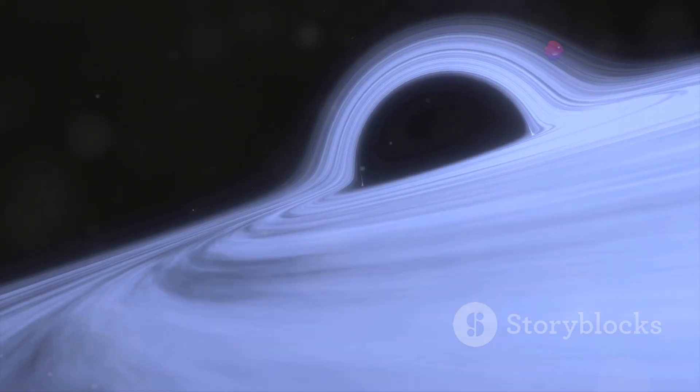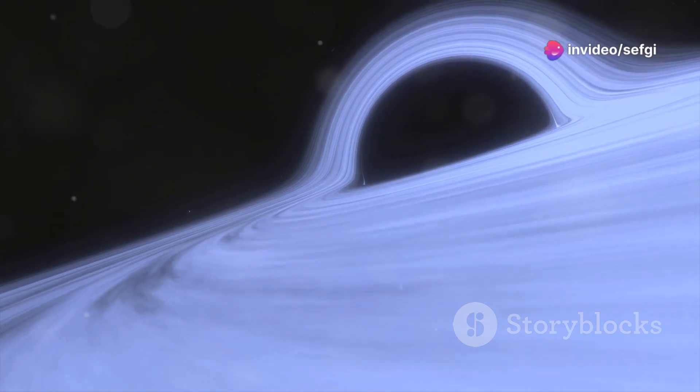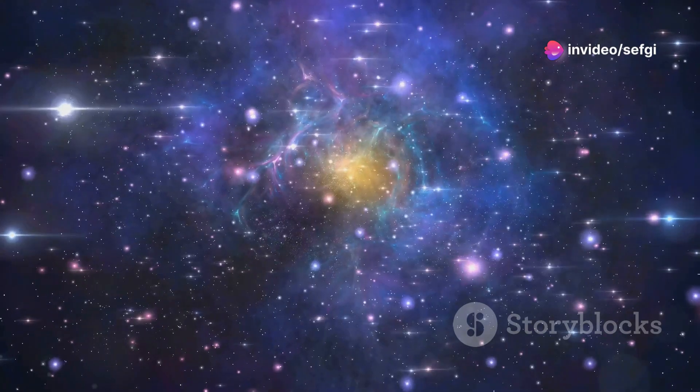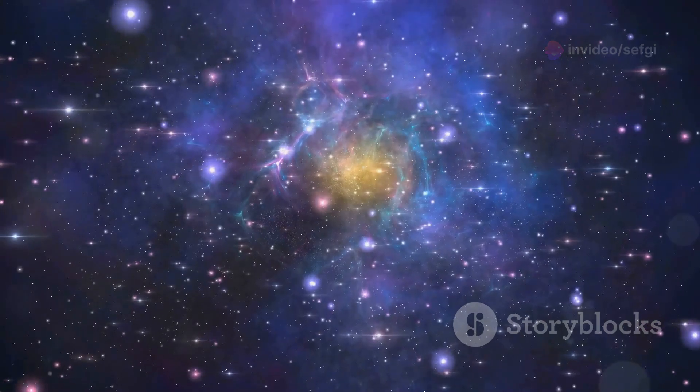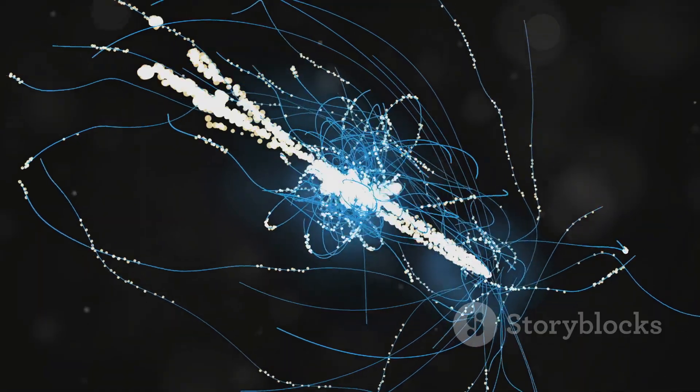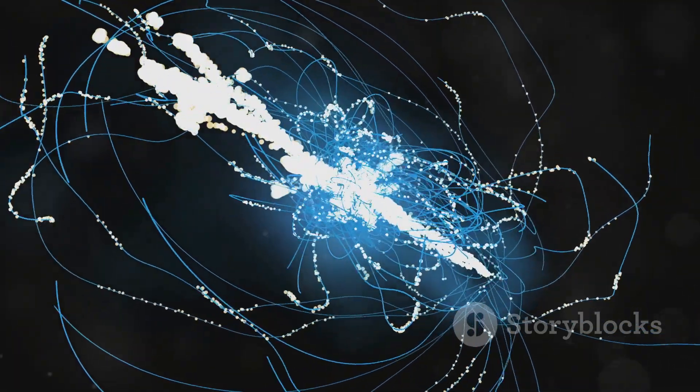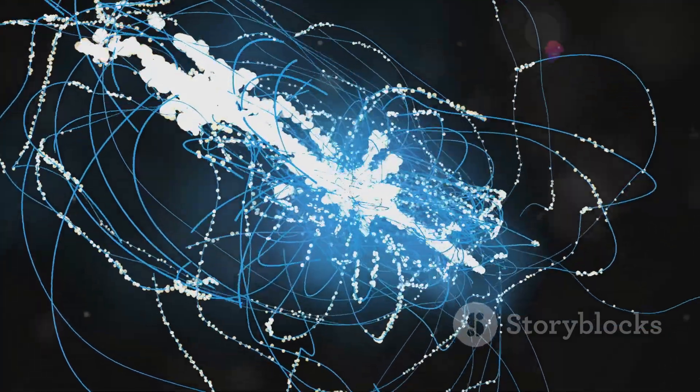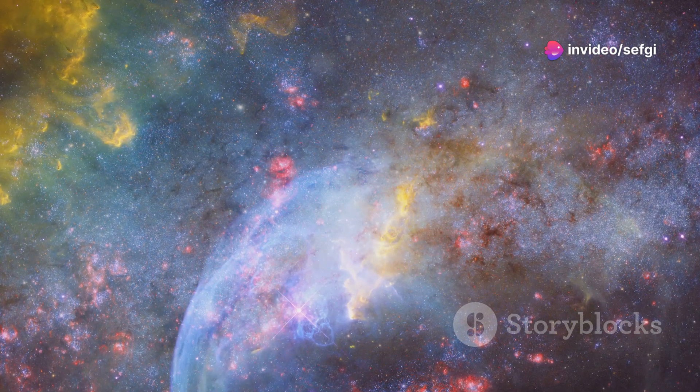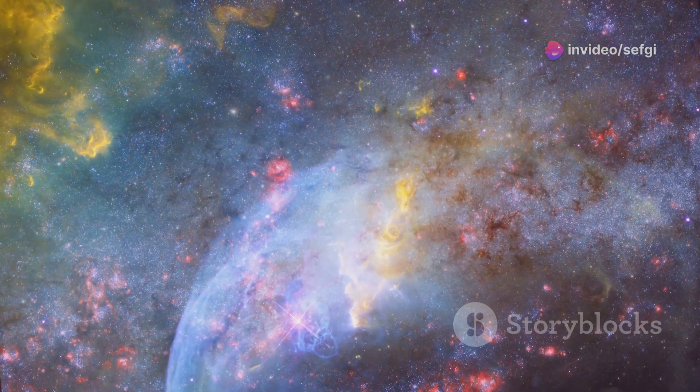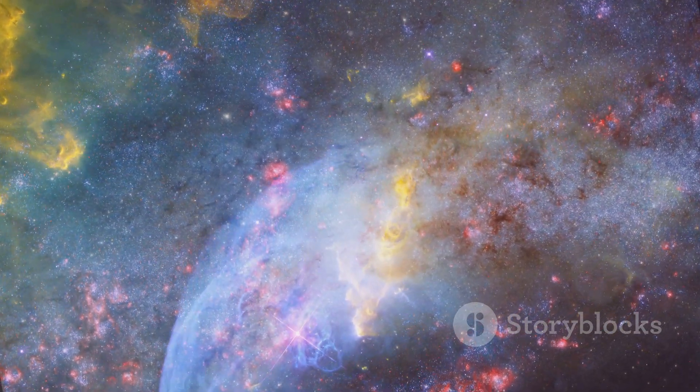Though invisible, dark matter's gravitational influence shapes the universe we observe today. It's the unseen hand guiding the evolution of galaxies and the architect of cosmic structures. The early universe was a hot, dense soup of particles, but as it expanded and cooled, gravity began to exert its influence. Dark matter, with its pervasive gravitational pull, acted as the scaffolding upon which the universe's structure was built. It clumped together first, forming gravitational wells that drew in ordinary matter.